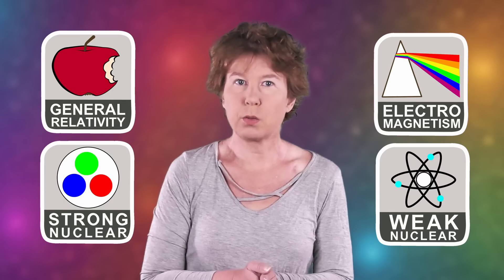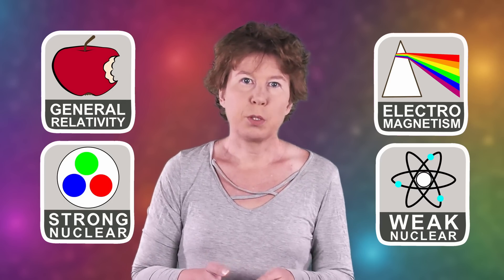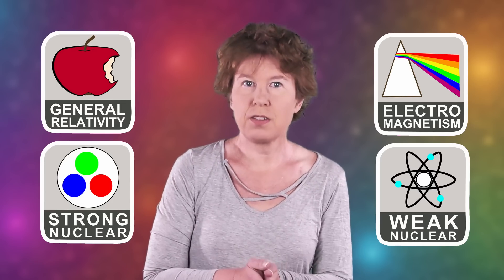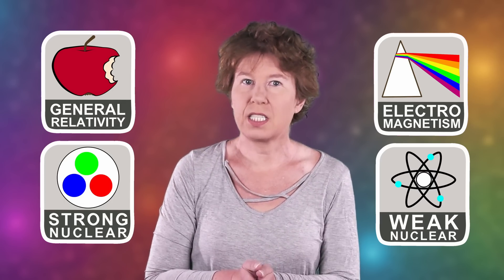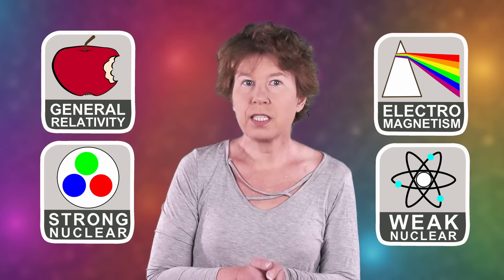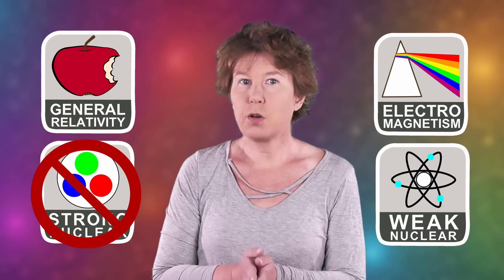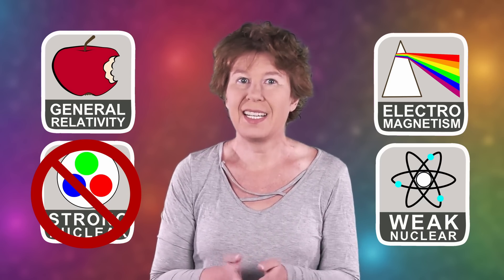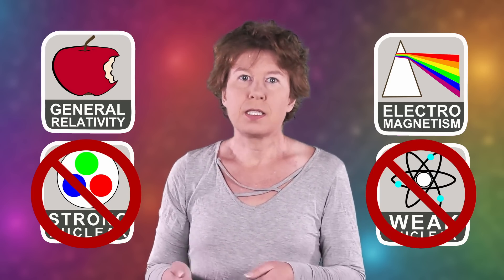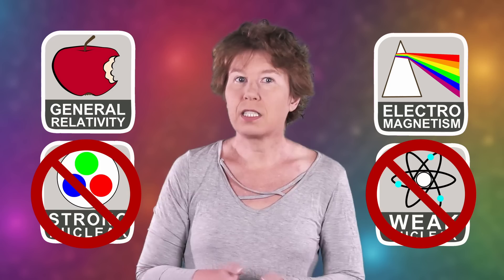Today, physicists know four fundamental interactions. Besides gravity, there's electromagnetism and the strong and weak nuclear interaction. But when Einstein finished his theory of general relativity, the strong nuclear interaction had not yet been discovered, and the theory for the weak nuclear interaction had not yet been developed. So he really only had two interactions to work with: gravity and electromagnetism.